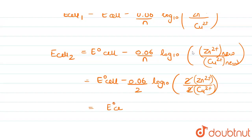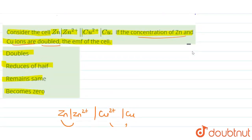So we again get E naught cell minus 0.06 upon 2, over here also N is equal to 2, into log to the base 10 Zn2+ concentration upon Cu2+ concentration. So this is also equal to E cell 1 which is equal to E cell 2. So E cell 2 is equal to E cell 1. So hence it remains the same. The correct answer is option C.